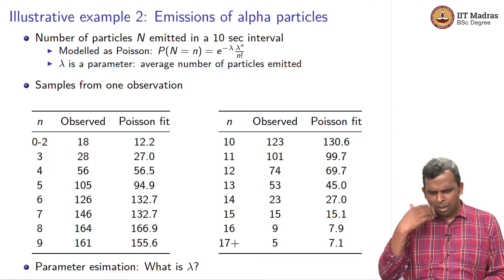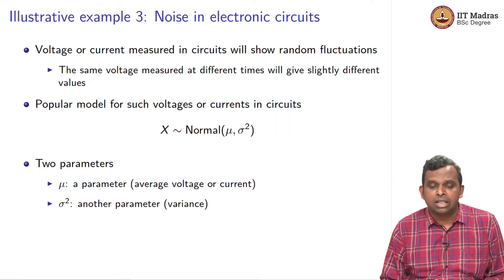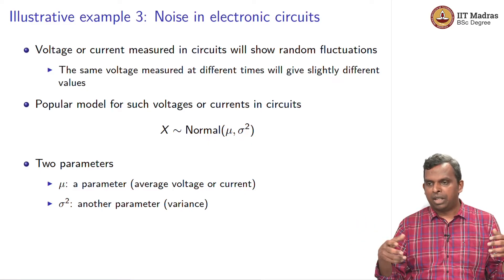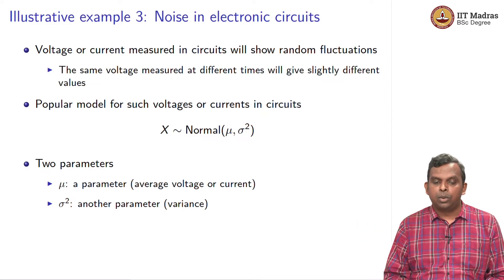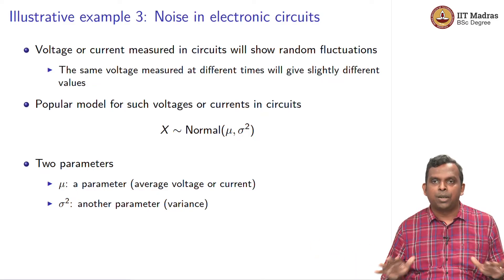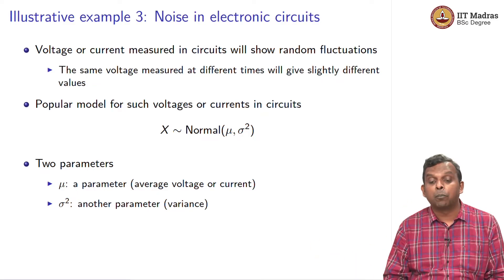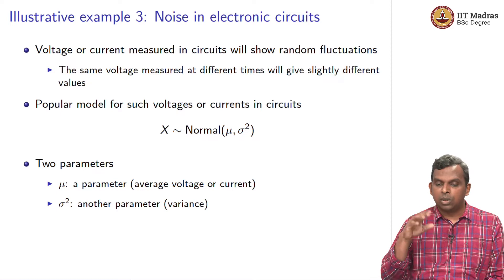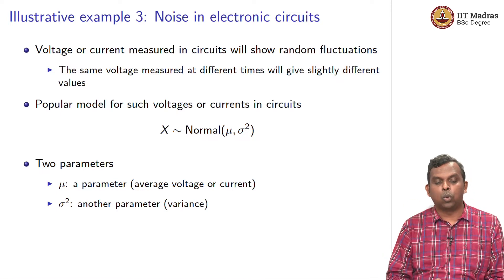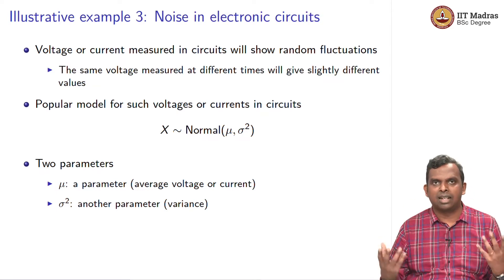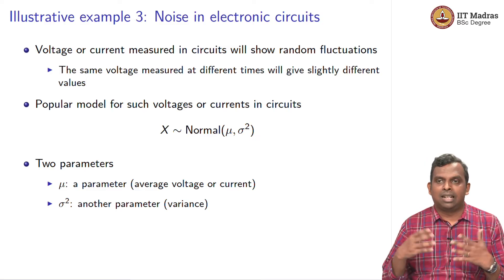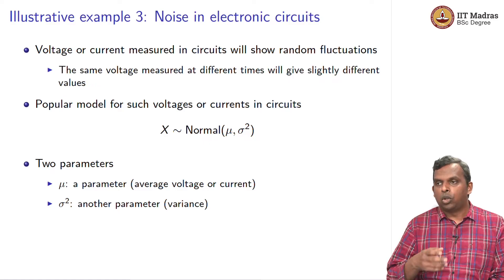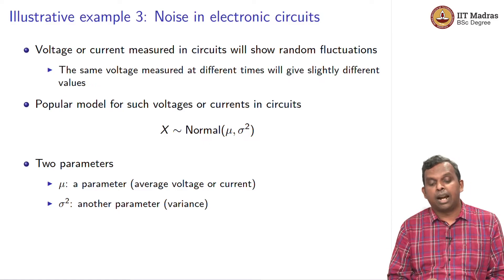So this is another example. There are many more examples like this. I want to give one more: noise in electronic circuits. If you have a circuit and you want to measure the voltage or current, you will see over time — even though nothing else is changing in the circuit — some random fluctuations. If you keep measuring with very sensitive instruments, you will see these random fluctuations over time, because of noise processes involving electrons in the circuit.